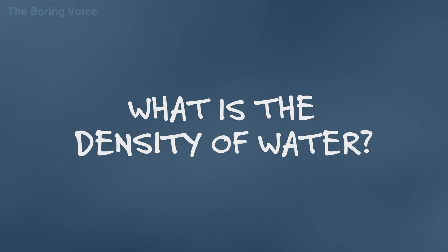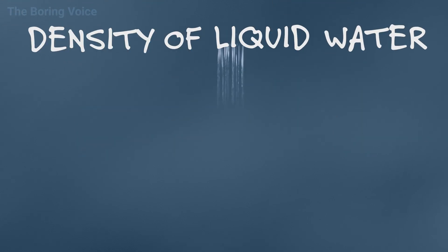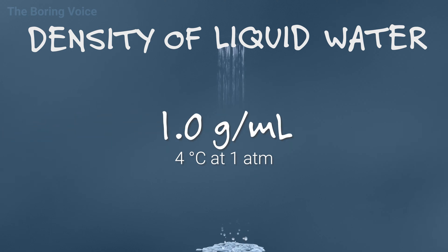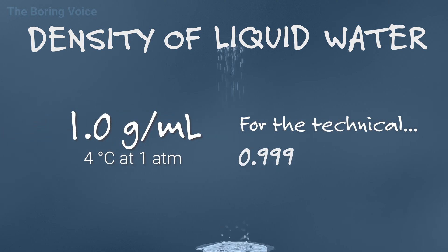What is the density of water? The density of liquid water at 4 degrees Celsius and standard atmospheric pressure is basically 1 gram per milliliter, or about 0.9998395 grams per milliliter, if you want to be technical about it.